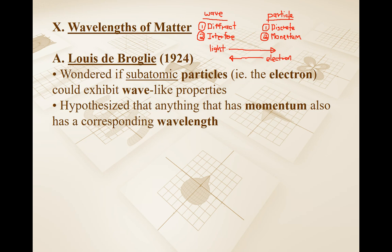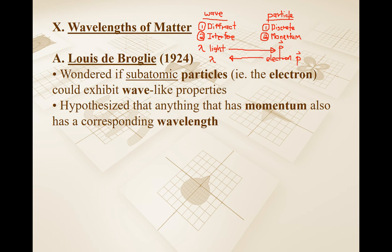His hypothesis is basically that if something has momentum, it must have a corresponding wavelength. A justification is that light, which has a wavelength, also has momentum. So an electron, which has momentum, technically should — according to the symmetry in nature — also have a wavelength.